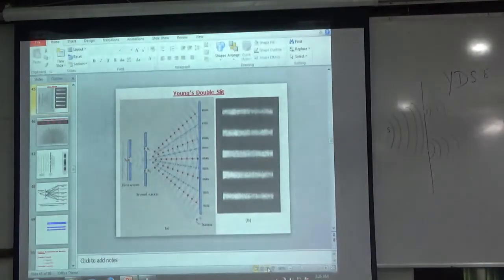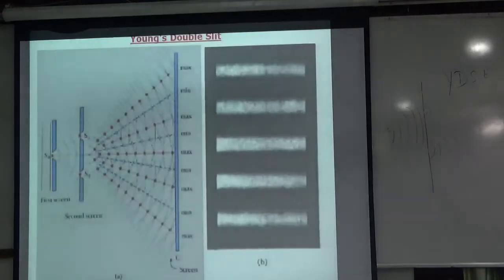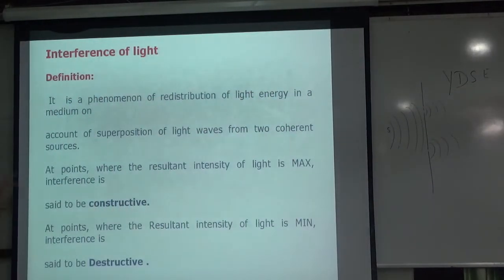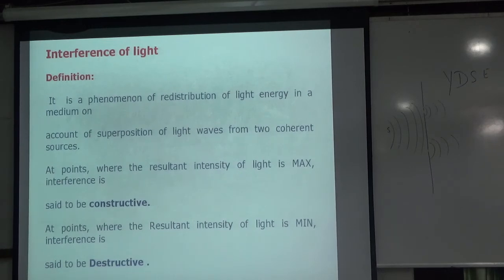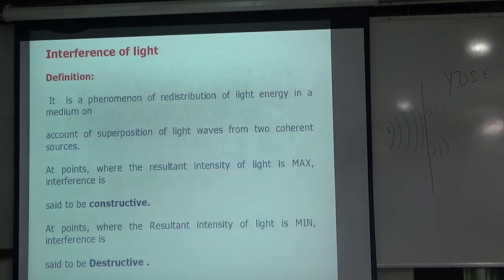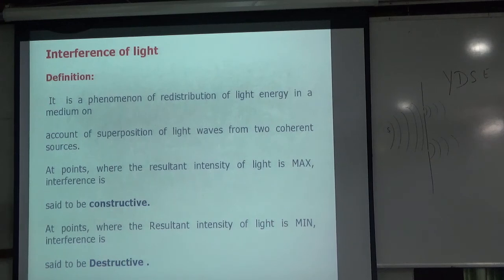Now let's read the definition. In the definition: it is the phenomenon of redistribution of light energy. Light energy is redistributed in the medium on account of superposition of light waves from two coherent sources. Coherent means identical sources. If the sources are identical, the amplitudes are exactly the same, and when there is cancellation of light we will see proper cancellation. If the amplitude is different, it will not show proper cancellation. So it is necessary to have a coherent source.